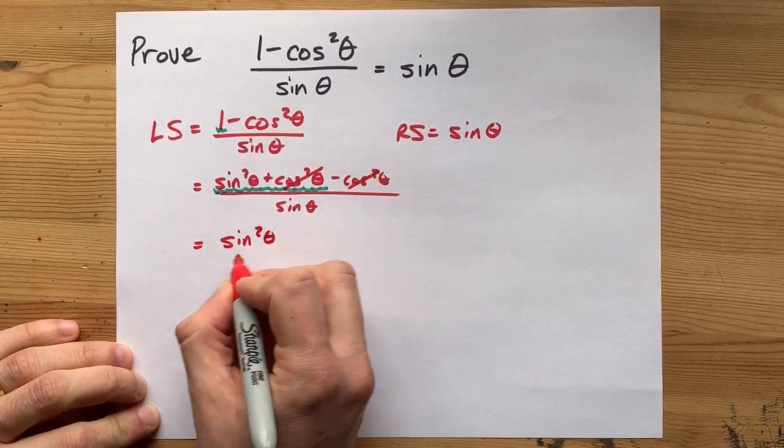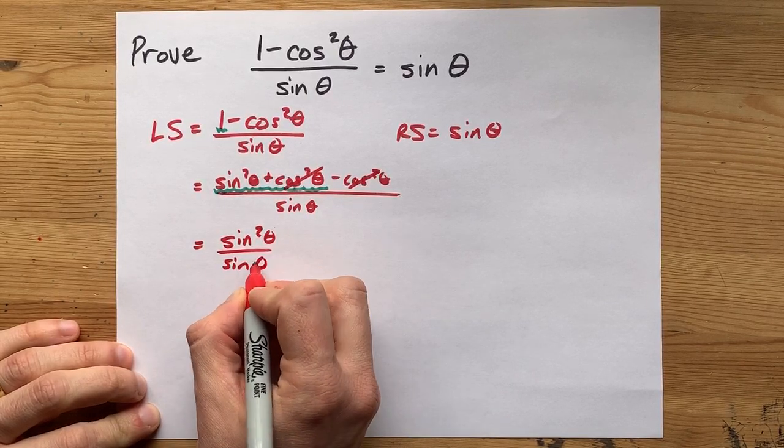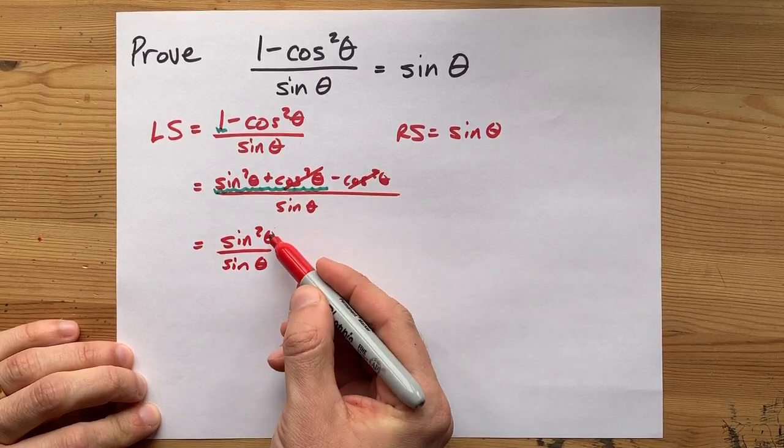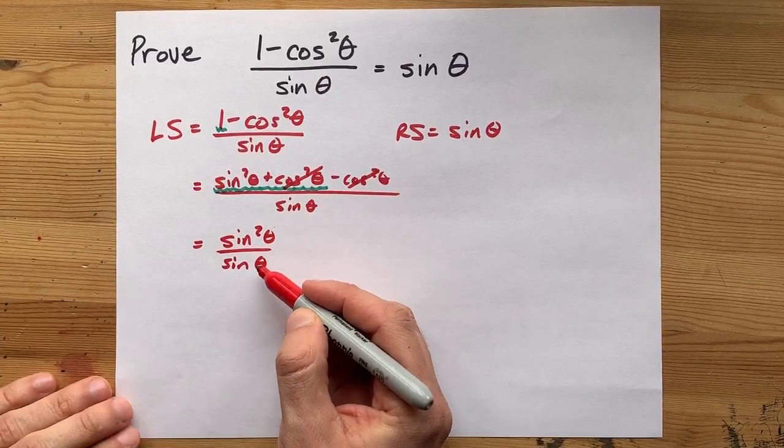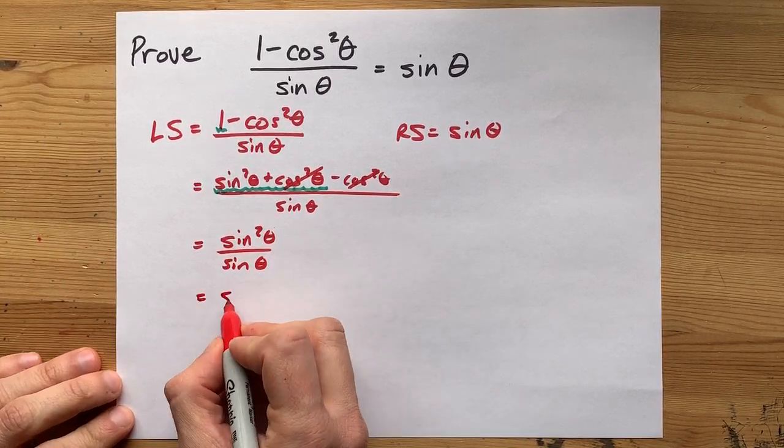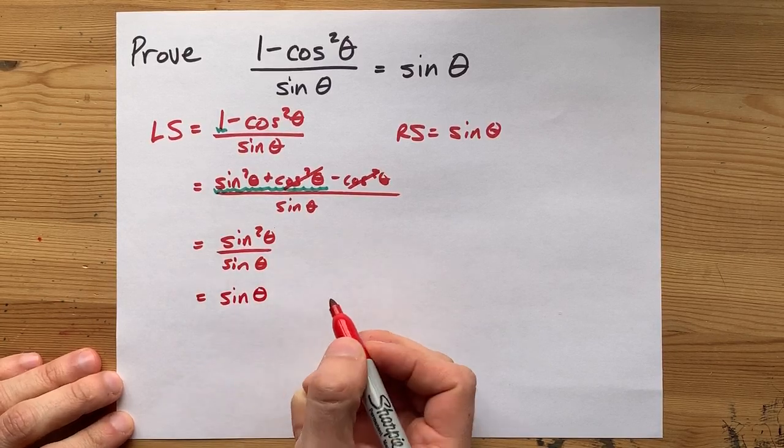I'm left with sine squared theta divided by sine theta, and this is something squared divided by itself once. That cancels out to a single sine theta.